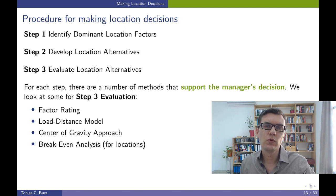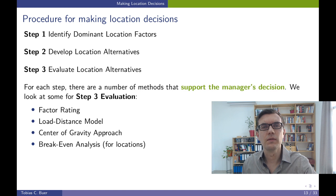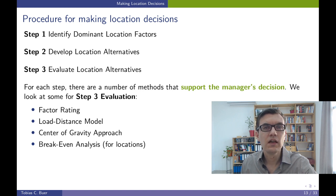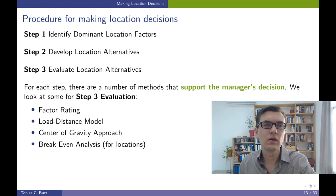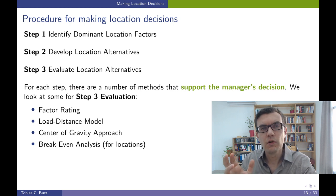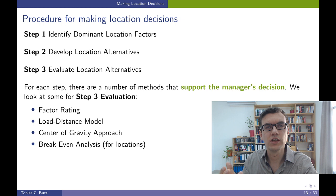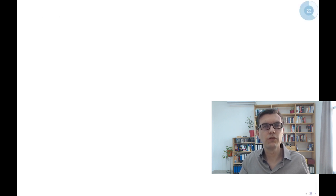I am going to discuss four methods that help in step number three, the evaluation decision. These four methods will all tell you if a location is good or not, but each individual method cannot cover all the aspects important for the location decision — every method looks at a specific criteria. The outcome of these methods can support the manager in her decision, but these methods will not make the decision for the manager. The first method we are going to have a closer look at is called factor rating.